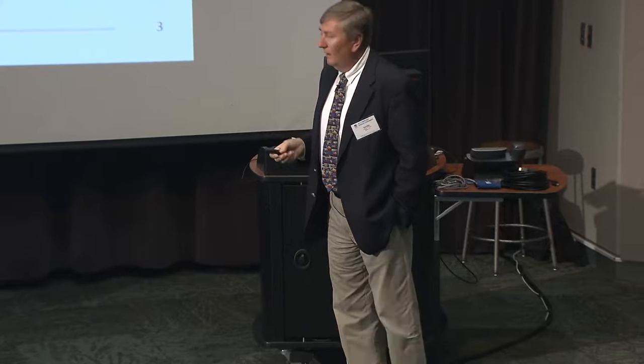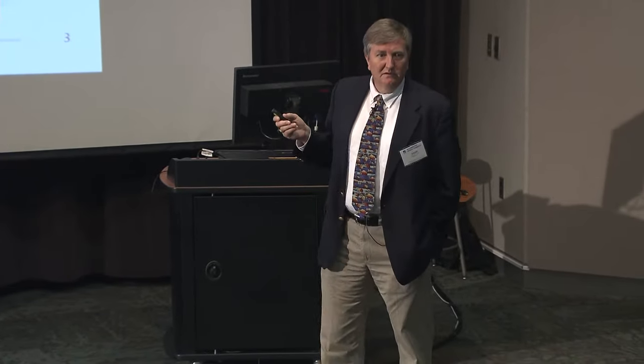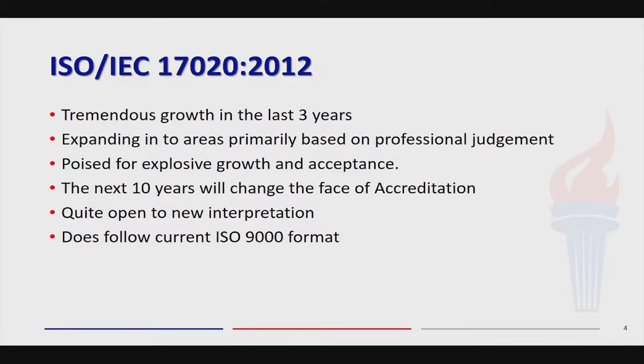The new standard has been through seven or eight revisions over the last eight years and voted down multiple times — it's been very slow to change and resistant to new interpretations. It doesn't follow the current ISO 9000 format, still following the 2003 version. With 17020, the latest version went from 2008 to the 2012 version. We've seen phenomenal growth in inspection bodies over the last three years, and we expect that to continue because inspection bodies are based primarily on professional judgment.